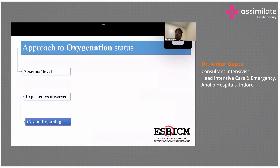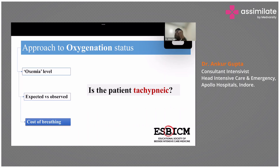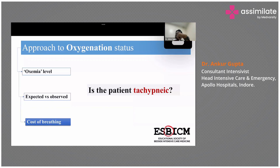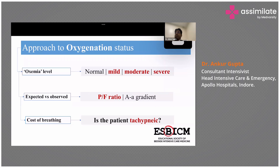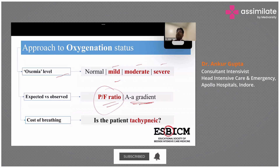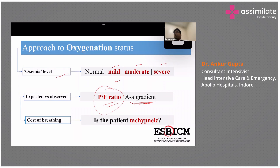Always look at the cost of breathing. You can have two patients: one with a PO2 of around 70 and a respiratory rate of 16, and another with a PO2 of 94 but a respiratory rate of 30. Though the second patient has a higher PO2, the tachypnea means the patient is putting in a lot of effort to maintain that oxygen level. So always assess oxygen status in terms of the effort the patient is making. To summarize: assess hypoxemia level (mild/moderate/severe), PF ratio for routine use, and the alveolar-arterial gradient for deeper analysis.